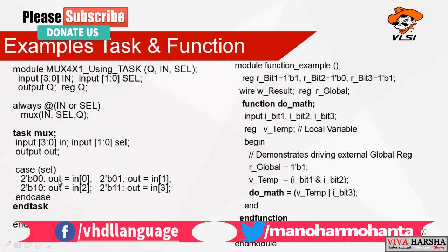In the function example, registers r_b1, r_b2, and r_b3 are declared as one-bit registers, and there is a wire called 'result'. The wire 'result' is assigned as 'assign w_result = do_math(...)'. Here 'do_math' is a function. In a function, only inputs are declared — no outputs. The inputs r_b1, r_b2, and r_b3 are passed in. A global variable is also accessed inside the function.